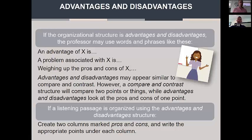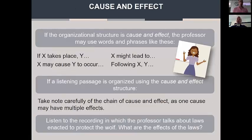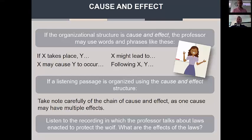If the student hears the words 'advantages' or 'disadvantages,' they should write a table or columns with the pros and cons, using plus or minus notation. Cause and effect is quite easy to recognize. It can appear similar to a process, but the professor will use words showing exactly a cause and effect relationship — things taking place that might lead to something or will cause something to happen. Generally there are multiple effects for a particular cause.